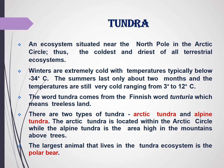Let us move to every ecosystem one by one. The first is tundra. It is situated near the north pole in the arctic circle and it is the coldest and driest among all the terrestrial ecosystems. The winters are extremely cold and the temperature goes below minus 34 degrees Celsius, and the summer lasts for only two months. Still, the summers have temperatures ranging from 3 to 12 degrees Celsius.